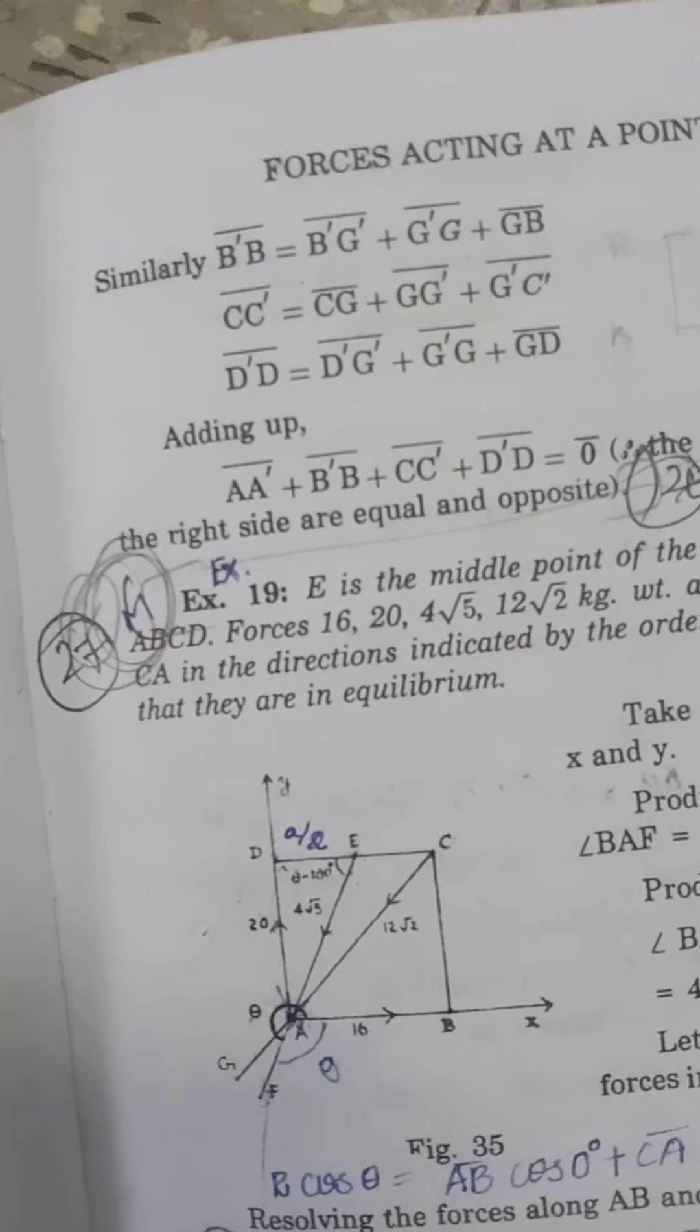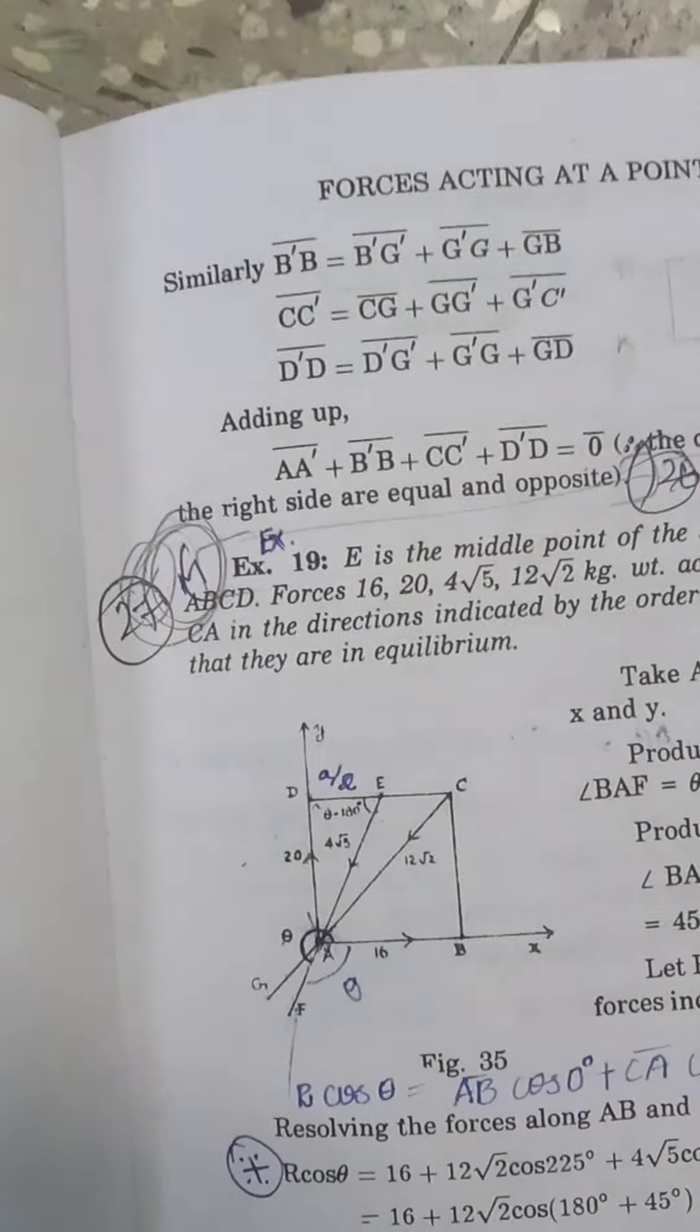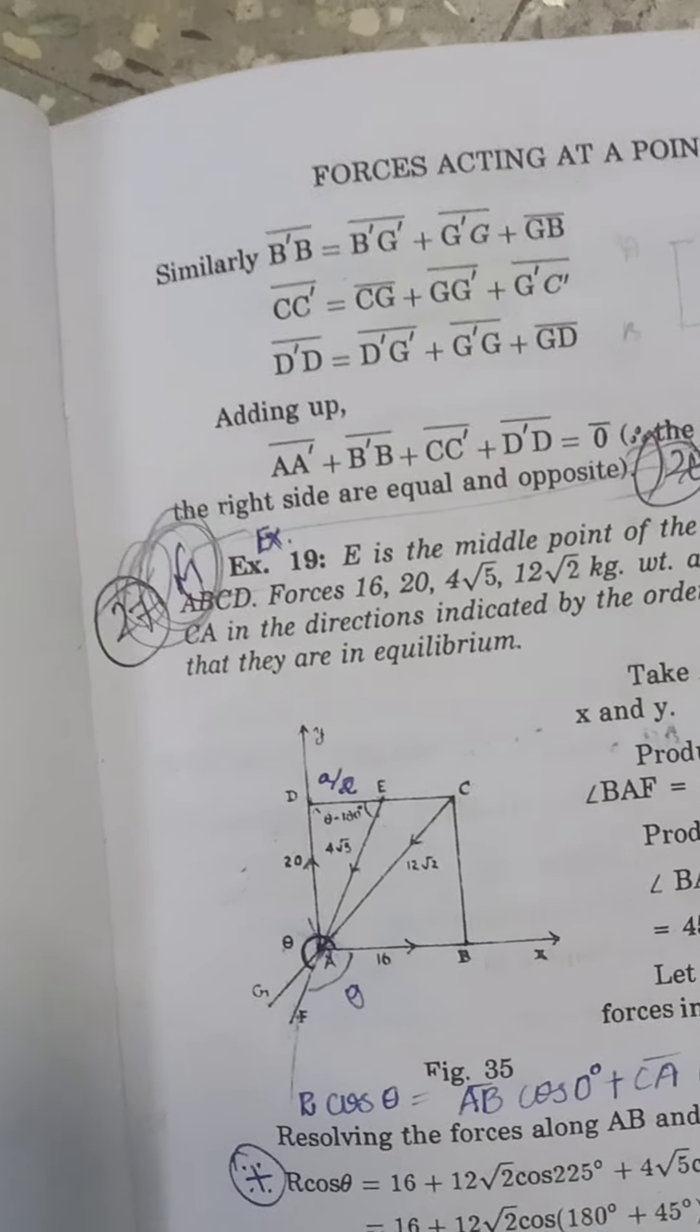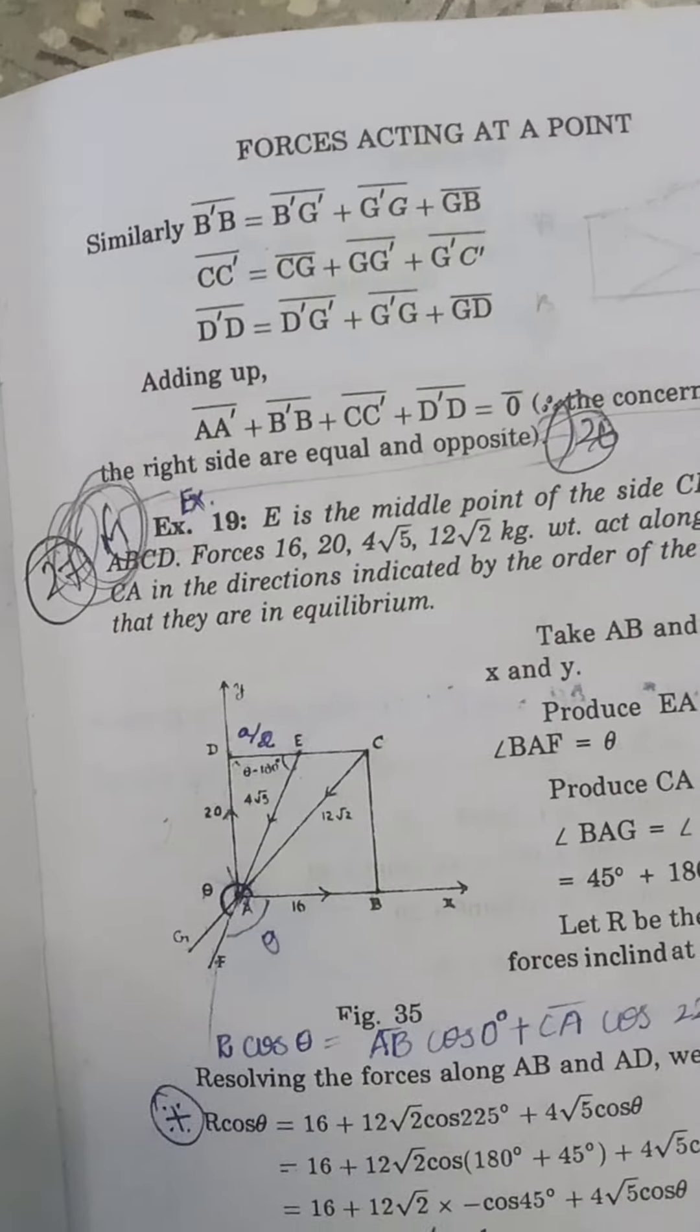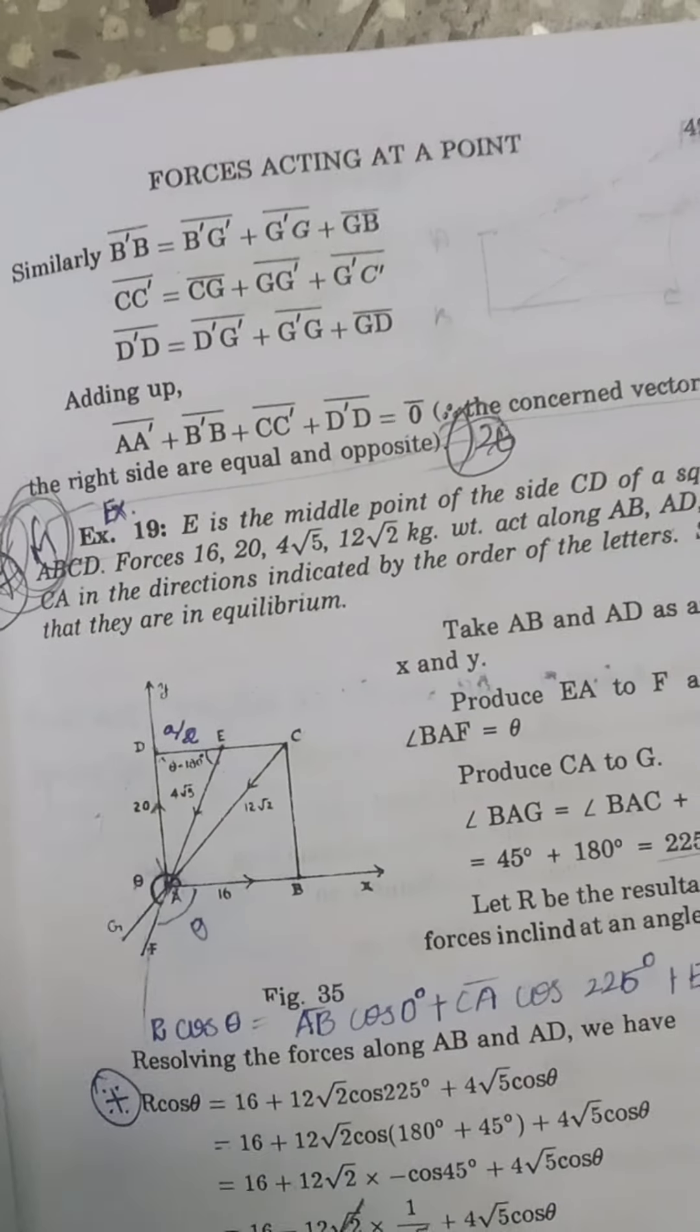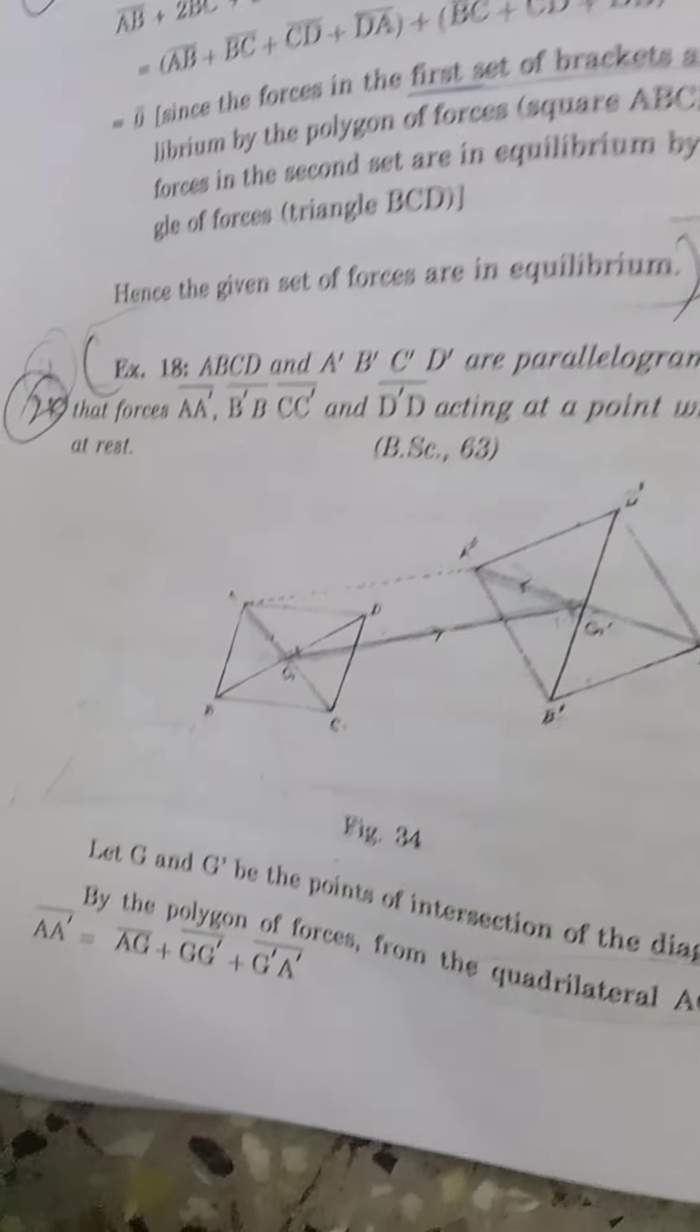G'G and GG' are equal and opposite, so they also get cancelled. While adding up, all of these terms are getting cancelled, so our answer will be zero. This is the solution for this question. Hope you all understand, and thank you.